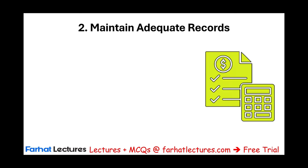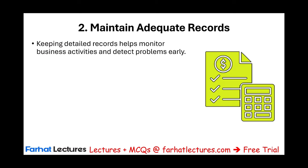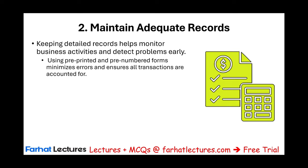The second principle is maintaining adequate records. If you don't have source documents, paperwork, and record keeping, you cannot run a company. You need to keep a detailed record to help monitor business activities and detect any problems early. For example, you can use pre-printed or pre-numbered forms to minimize errors and ensure all transactions are accounted for.